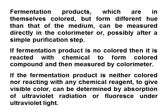Organic acid fermentation products which are themselves colored but form a different hue than that of the medium are measured directly in the colorimeter, or possibly after a simple purification step. If the fermentation product is not colored, it is reacted with a chemical to form a colored compound and then measured by colorimeter. If the fermentation product is neither colored nor reactive with any chemical reagent to give a visible color, it can be determined by absorption of ultraviolet radiation or fluorescence under ultraviolet light.